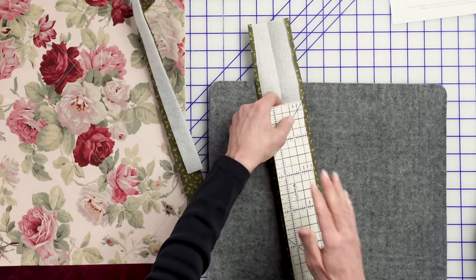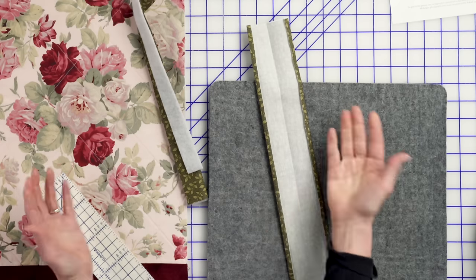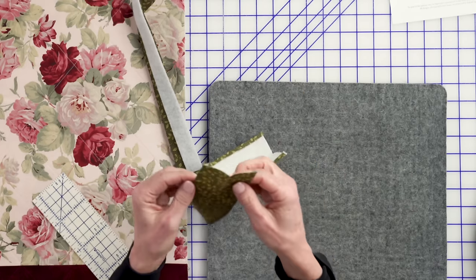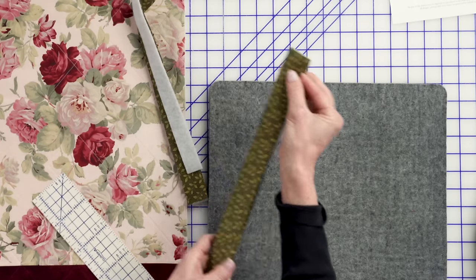So go ahead, both edges are folded in a quarter of an inch for both straps. And as you can see, we simply folded that in half to find our center.